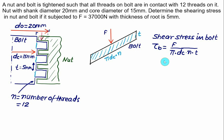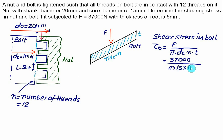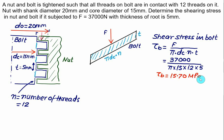Force F = 37,000 N divided by (pi × DC × N × T), where core diameter = 15 mm, number of threads = 12, and thickness t = 5 mm. This gives shear stress Tau_B = 15.7 N/mm² = 15.7 MPa.